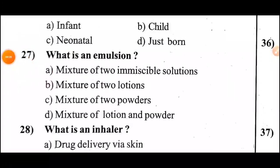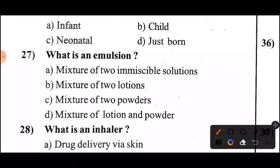Question 27: What is an emulsion? Take 5 seconds. The answer: an emulsion is Option A — a mixture of two immiscible liquids.